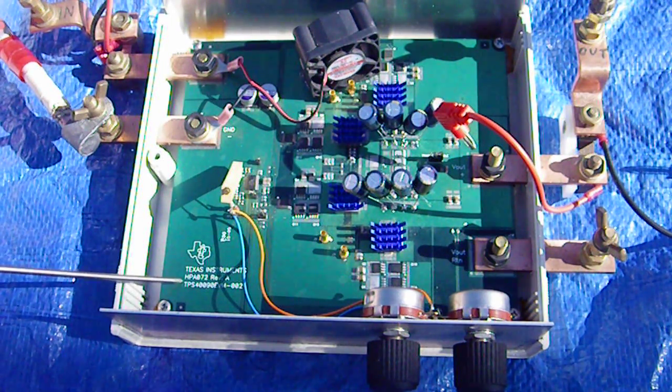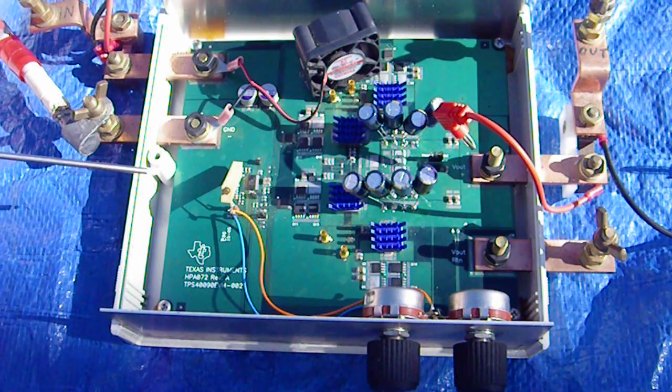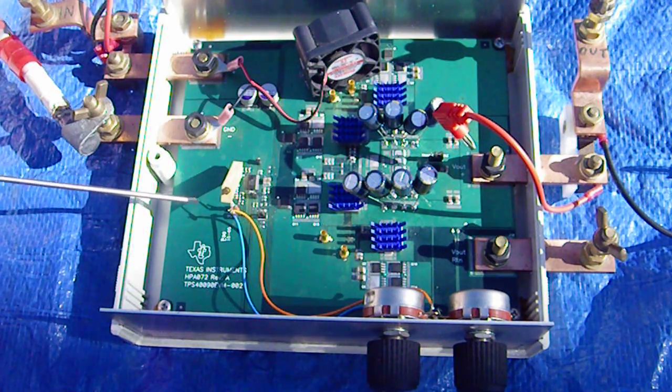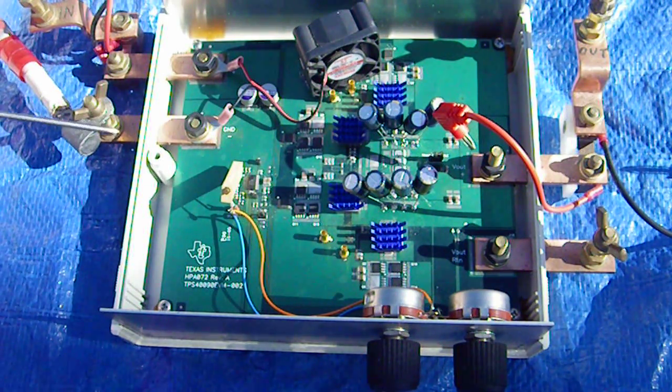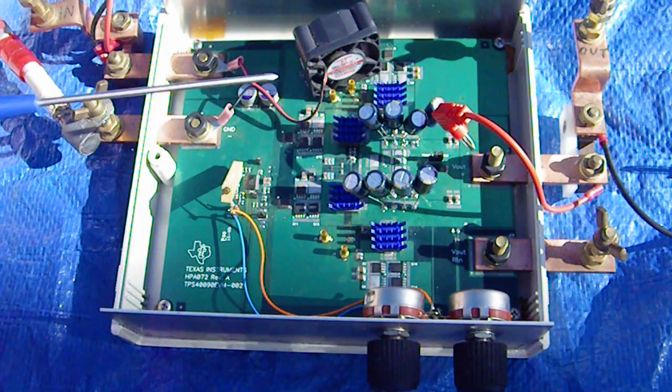Now, this is a Texas Instruments thing. It's only supposed to put out a fixed voltage but if you remove this resistor and replace it with this pot, there's a resistor on here that you remove. I can show you on the schematic.